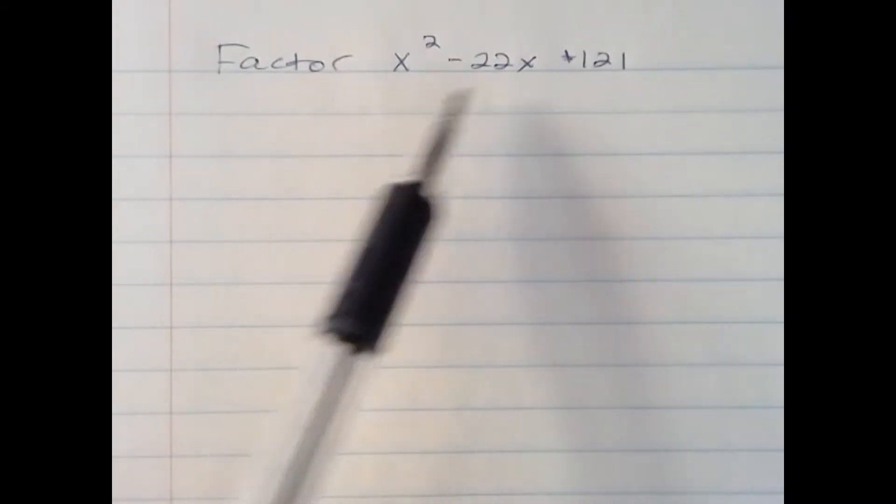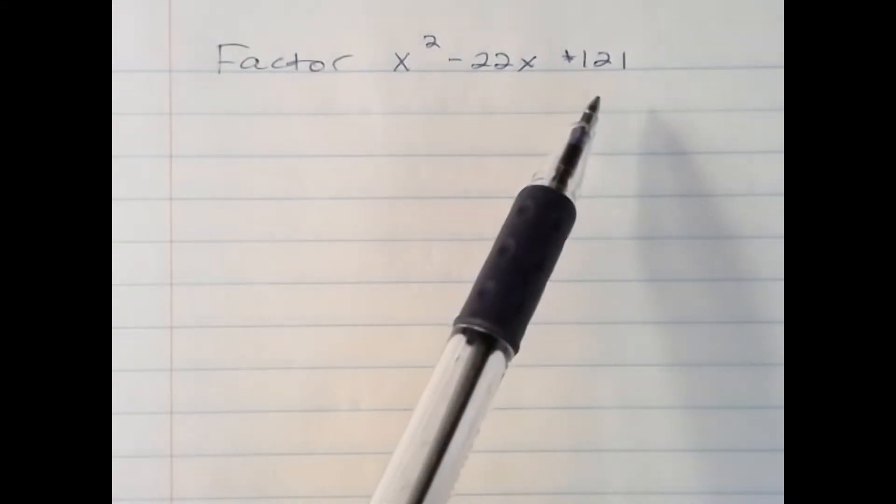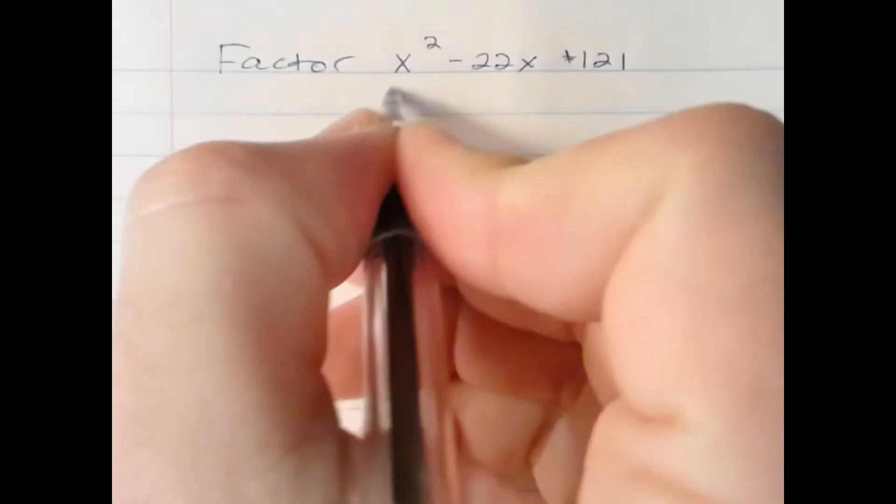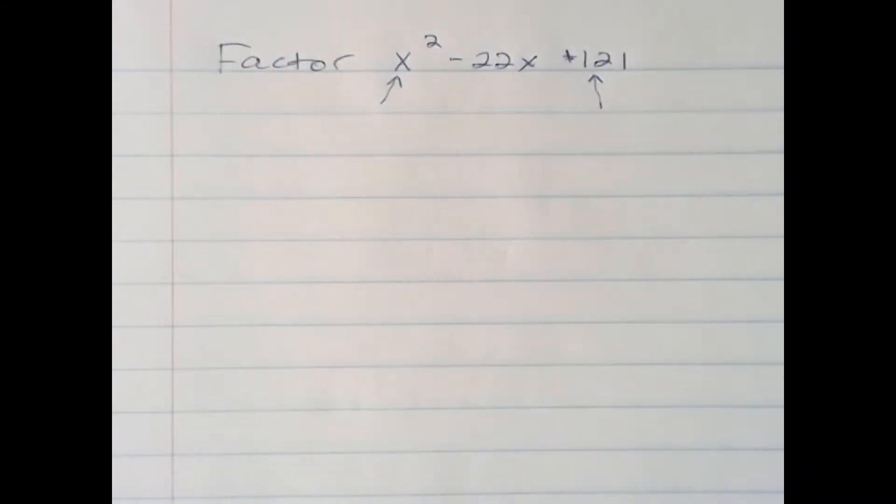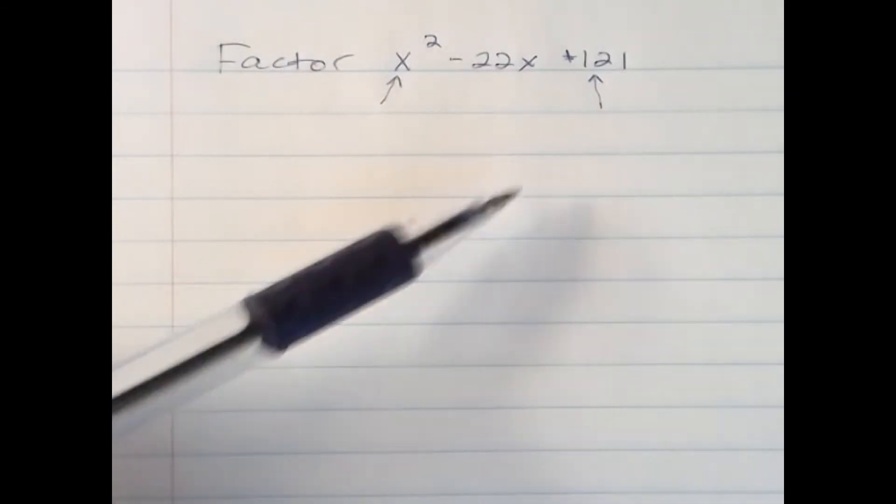We have x squared minus 22x plus 121. We first identify it being a perfect square trinomial to see if the first and last terms are perfect squares, and they are.